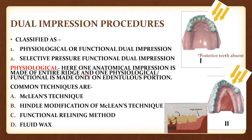The first type is the physiological one. Here, one anatomical impression is made of the entire ridge, and one physiological or functional impression — where the patient performs functions like chewing or biting — is made only of the edentulous portion. Common techniques used in this physiological category are Macklin's, Hindle's, functional relining, and fluid wax.